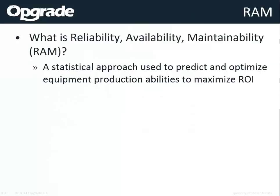RAM — Reliability, Availability, and Maintainability — is a way to optimize equipment to maximize return on investment. You can make something more reliable by adding redundancy in parallel or buying more expensive equipment, but you only want to do that if it's going to make the client more money and improve their return on investment.